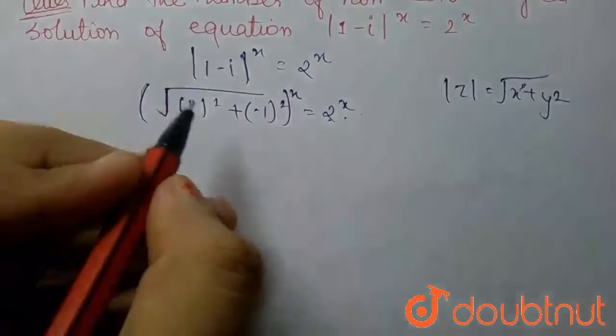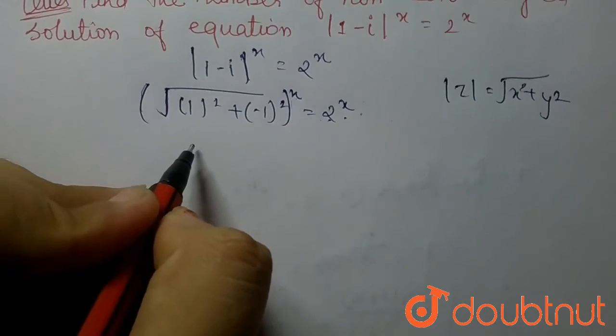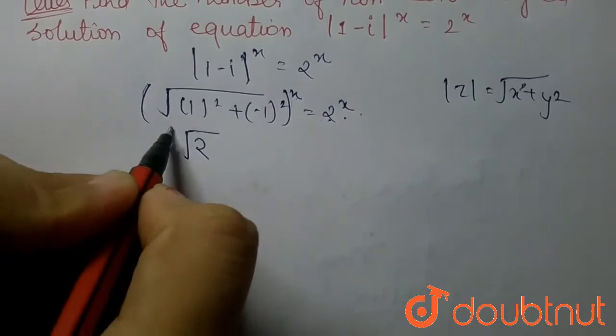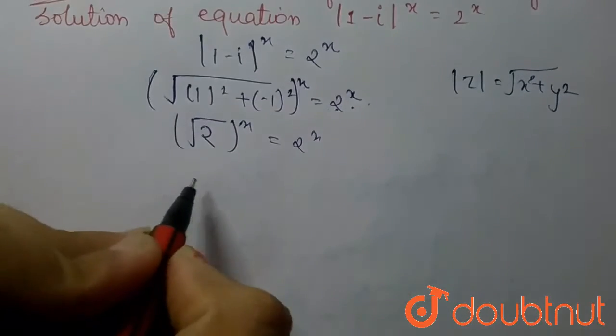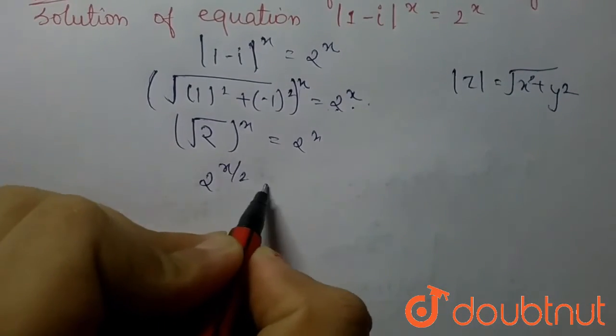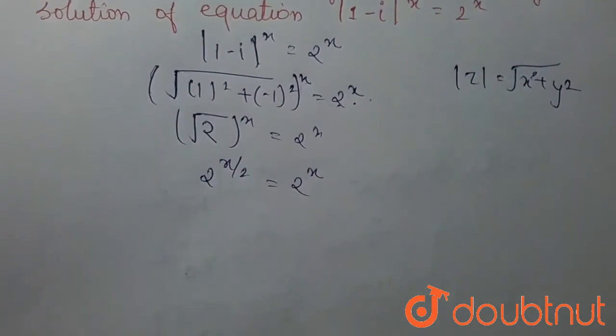So we can write as square root 2 to the power x equals 2 to the power x. So the value of 2 to the power x/2 equals 2 to the power x. If the bases are equal, we equate the powers.